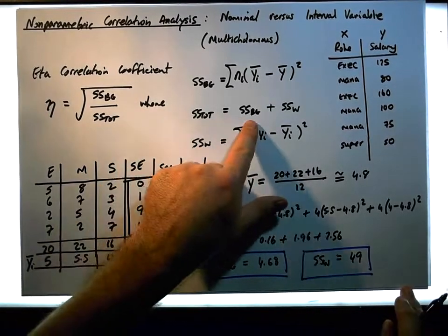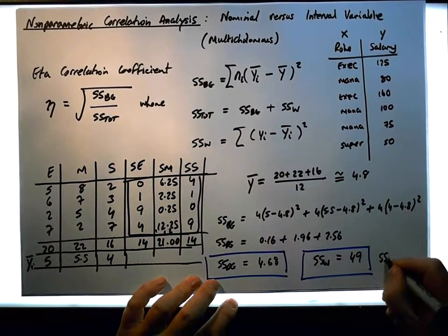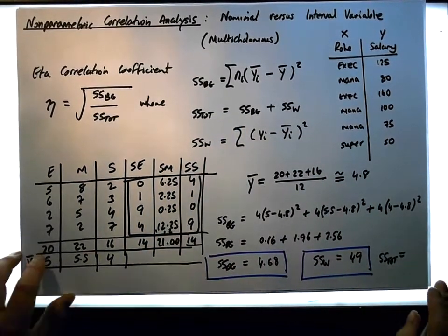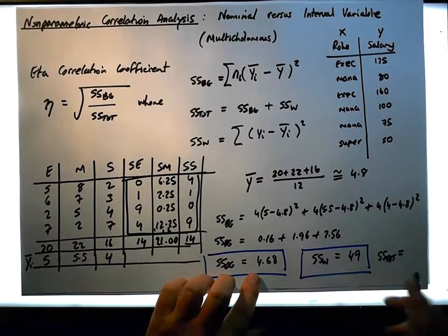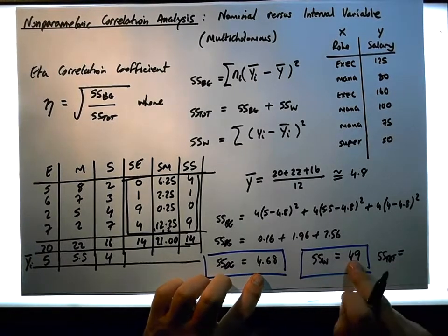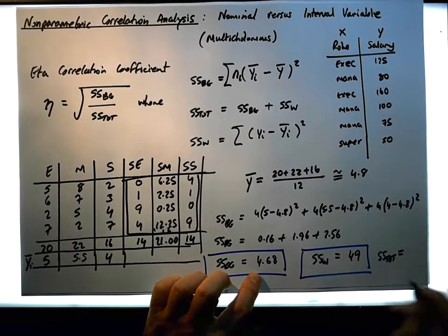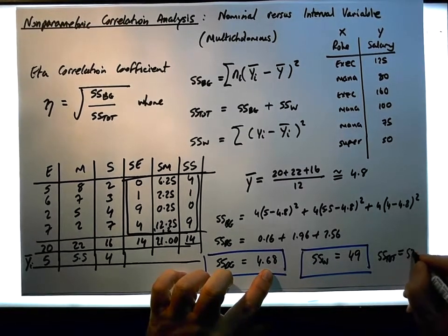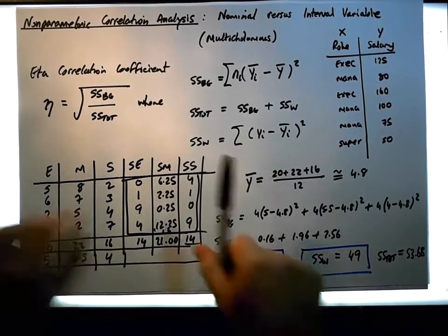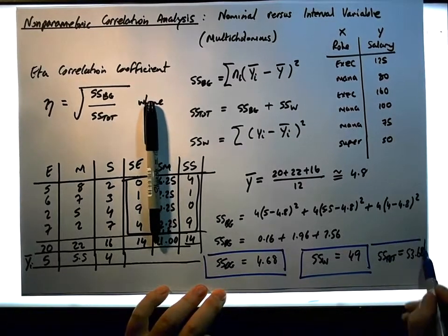So that's our sum of squares within measure, which now we can actually calculate our sum of squares total, because it's just the sum of both of those measures. We have our sum of squares total is simply equal to the sum of these two things here, which is 49 plus 4, which is going to give us 53.68.